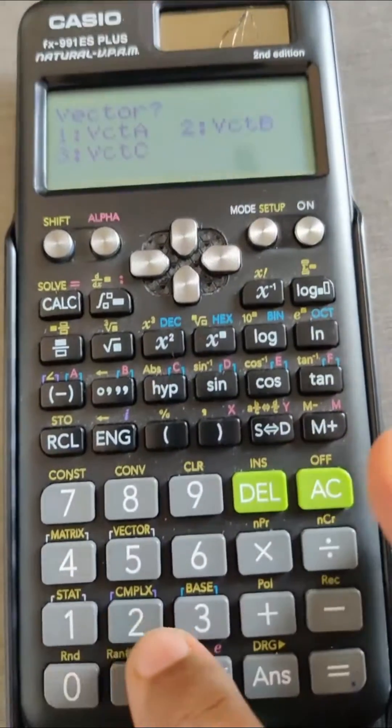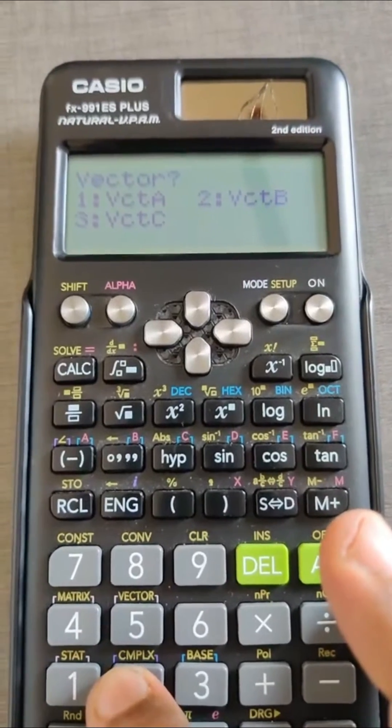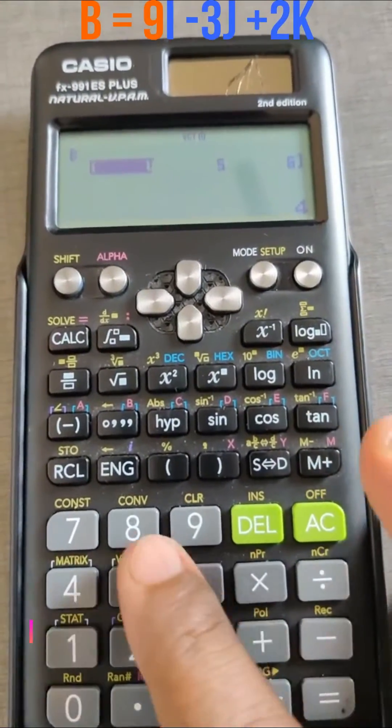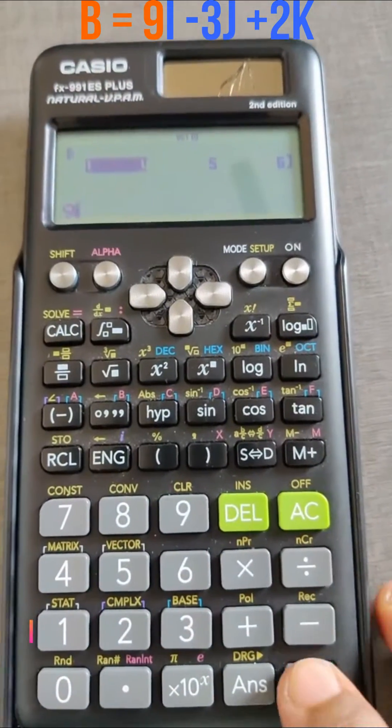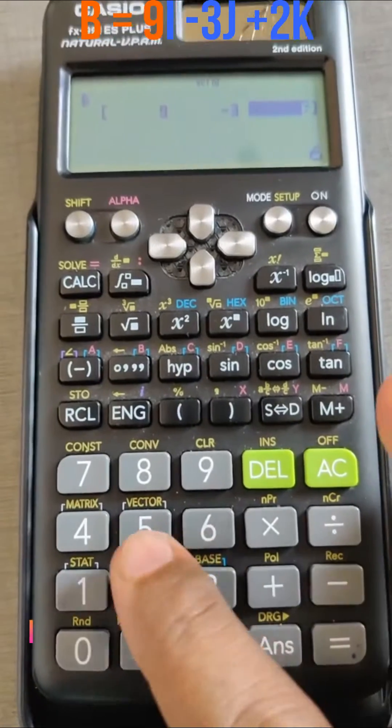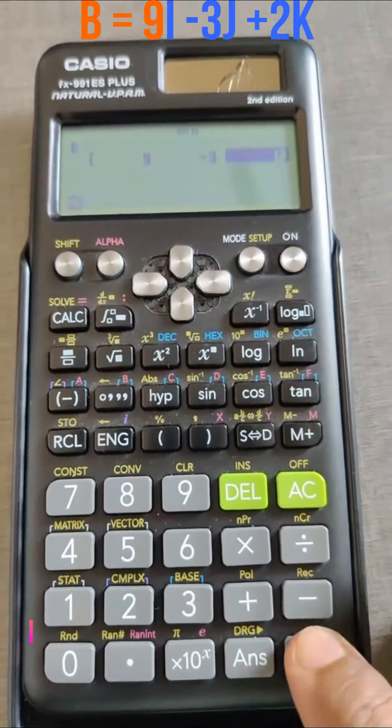Now we'll select the second option because we'll enter vector B, and it is again three i j k factors. We'll put the values here: 9i minus 3j plus 2k. In this way you can enter the vectors in the calculator.